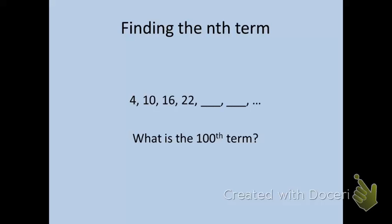One way to do that would be to figure out how much the sequence is going up by each time, and then keep adding that number until you get to the 100th term. That would certainly work, but it's not very efficient. It would take a very long time. Now we're going to look at another way to do that, and that's by coming up with a formula.